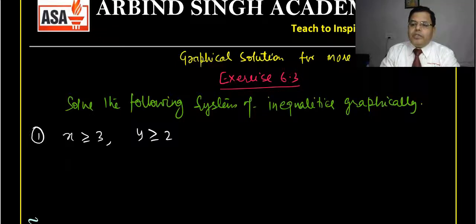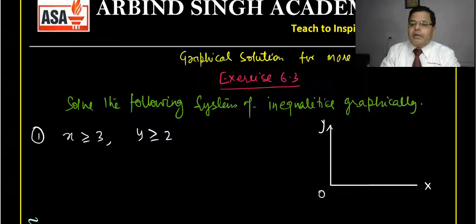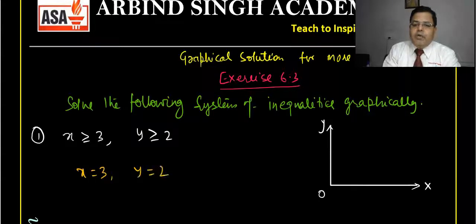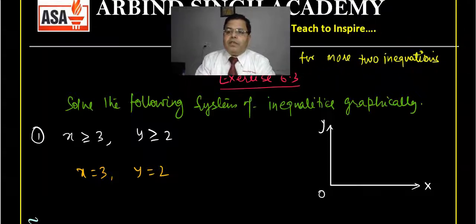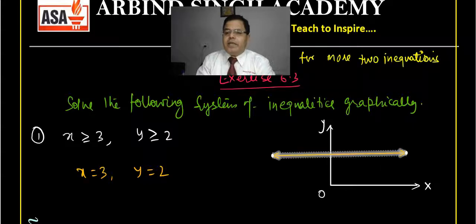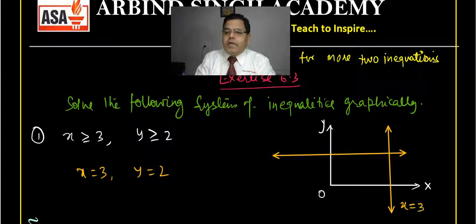Since it is written in the positive quadrant, I can draw only the positive quadrant. This is the x-axis, this one is the y-axis, and this is the origin. We have two inequalities, so first we have to draw the equations: x = 3 and y = 2. The line y = 2 is parallel to the x-axis, and x = 3 is a line parallel to the y-axis.